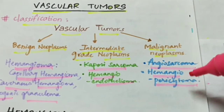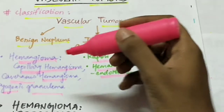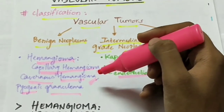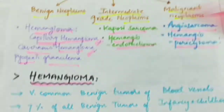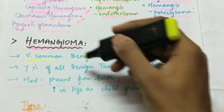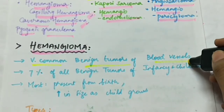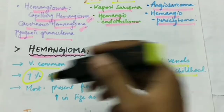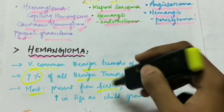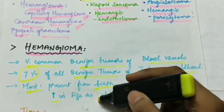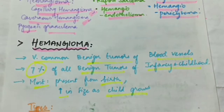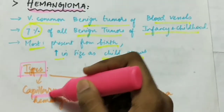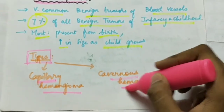The important vascular tumors are the hemangioma — capillary and cavernous hemangioma. Hemangiomas are very common benign tumors of the blood vessels, constituting 7% of all benign tumors of infancy and childhood. Mostly they are present from birth and their size increases as the child grows. The main types are capillary hemangioma and cavernous hemangioma.